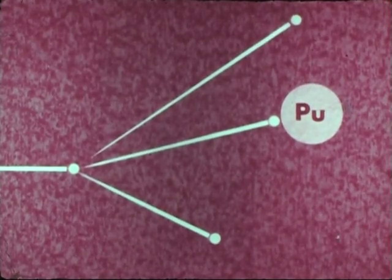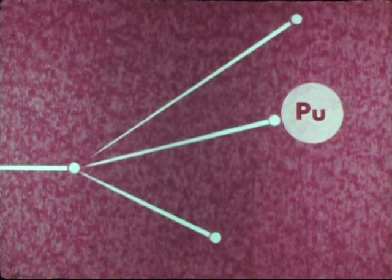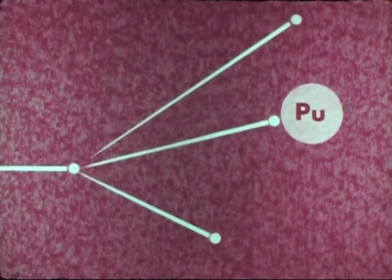So, a minimum of two neutrons must be produced in order to simply maintain the supply of fuel which is burned in the reactor.